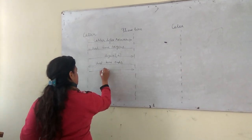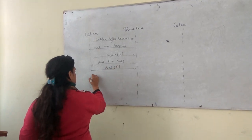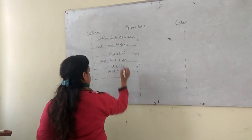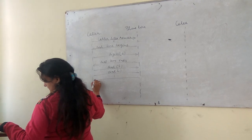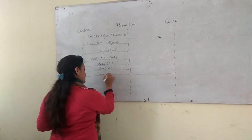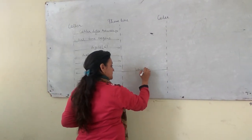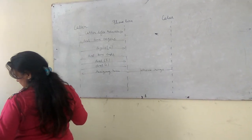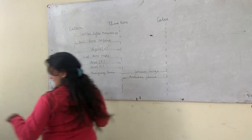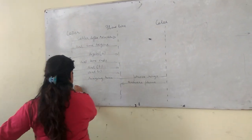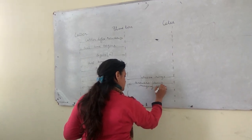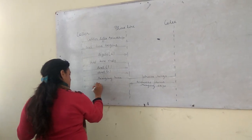Now you are dialing the numbers — randomly taking any number, say 5, then 1, and so on, until the list of 6 numbers is complete. Then this line goes to the callee. What this line says is phone rings — ringing tune. I will be having a ringing tune here, and phone rings on the callee side. Then I get a reply back from the callee: answer phone. After answer phone, ringing stops — when it answers, ringing automatically stops. And we have a tone; tone stops.